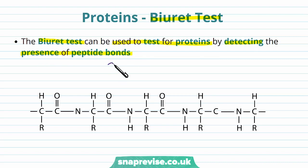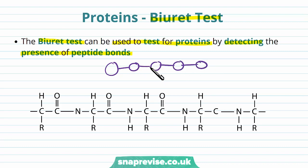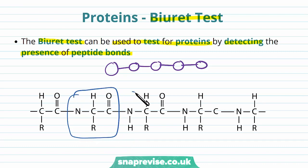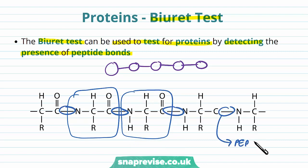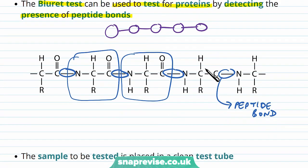Remember, a protein is a chain of amino acids and the bond that keeps those amino acids together is what we're testing for in this particular chemical test. Here we have our different amino acids attached to each other in a chain, and every time we see these links we see a peptide bond — and it's these peptide bonds which are being tested for in this particular procedure.